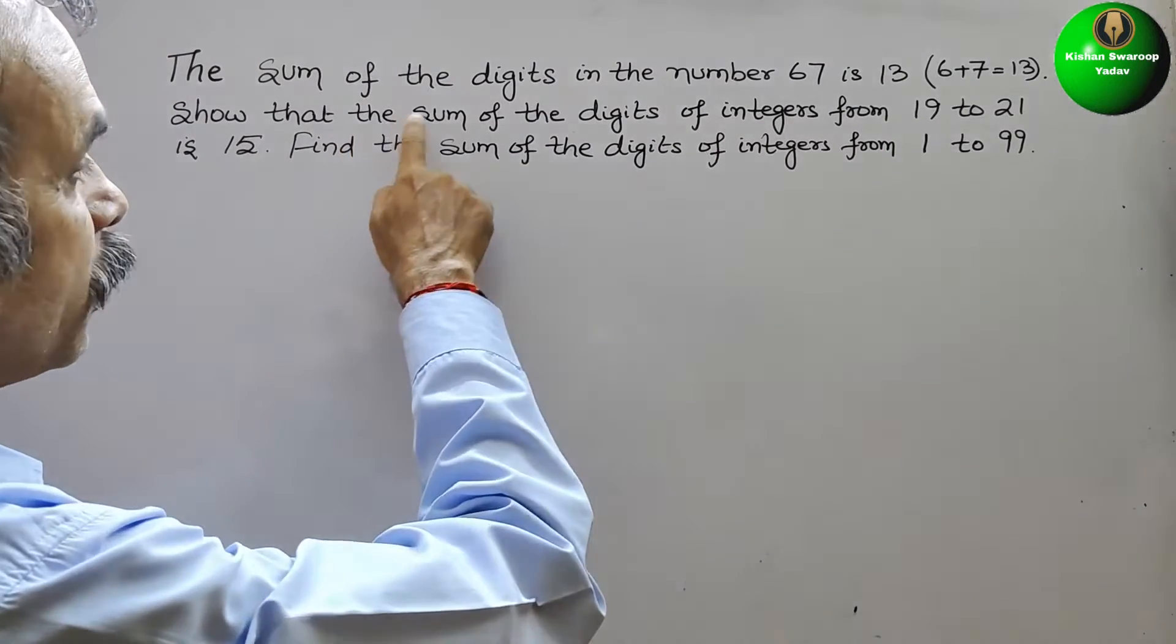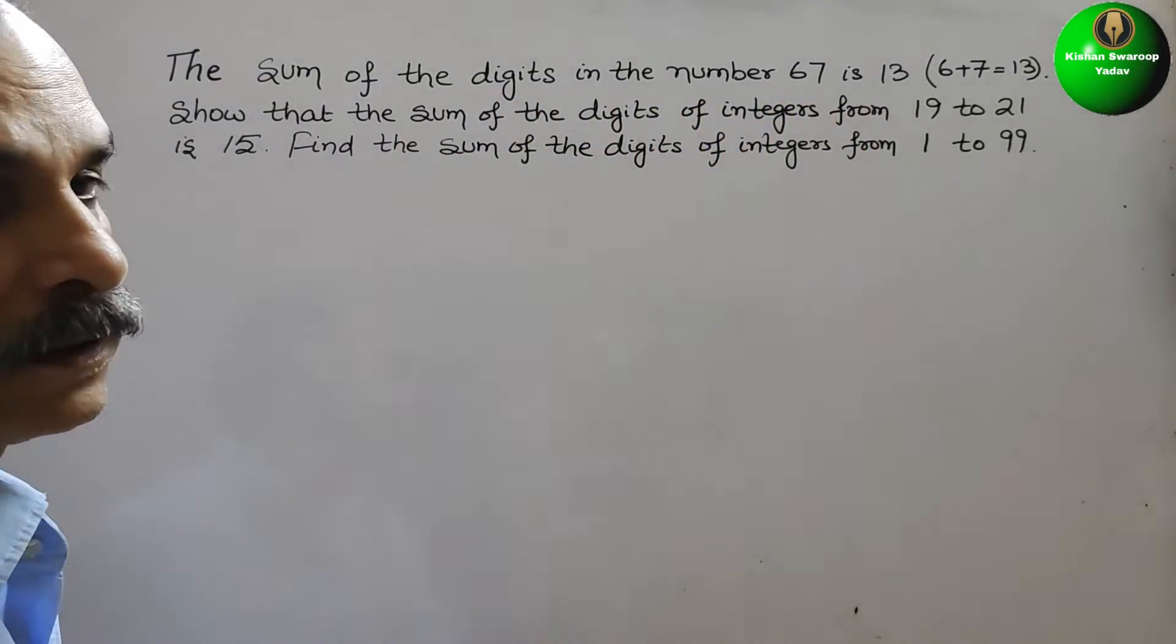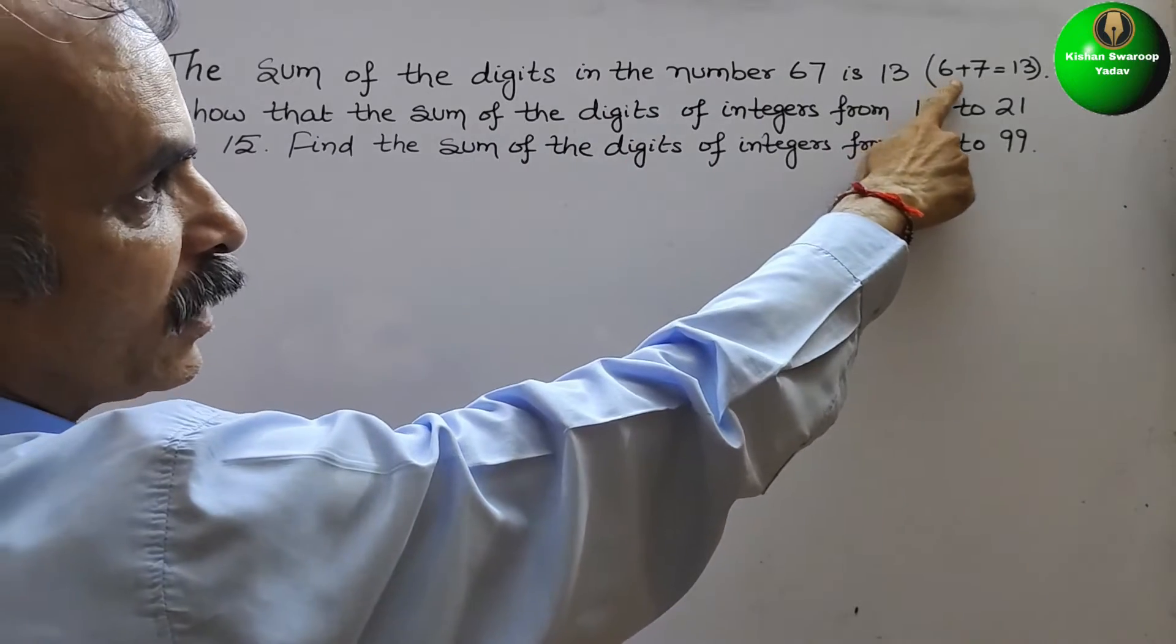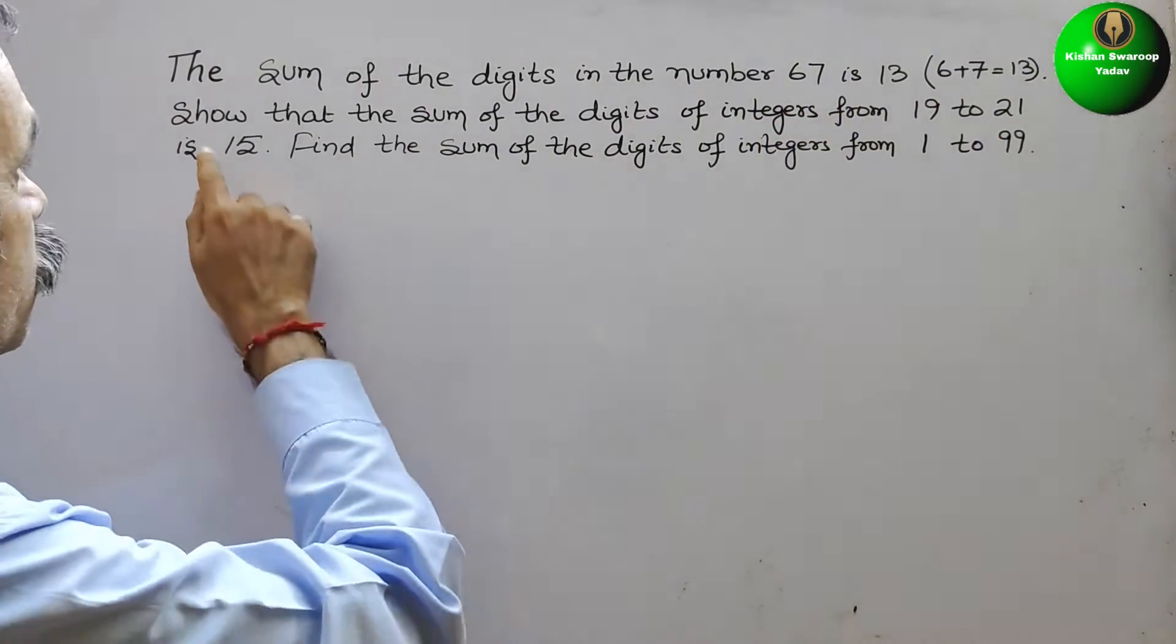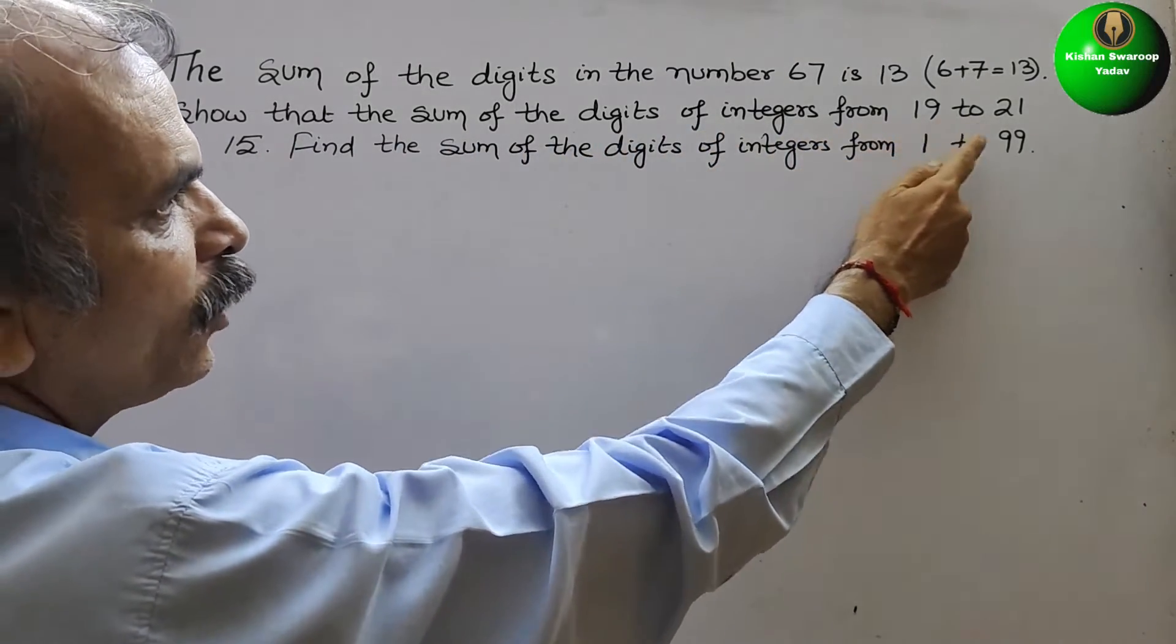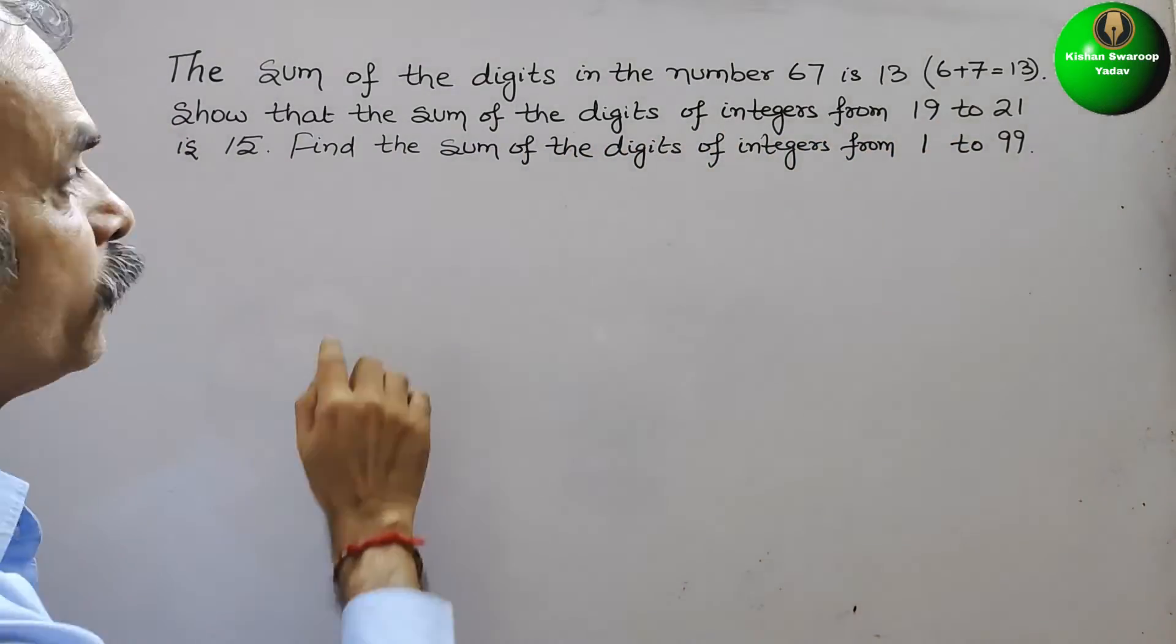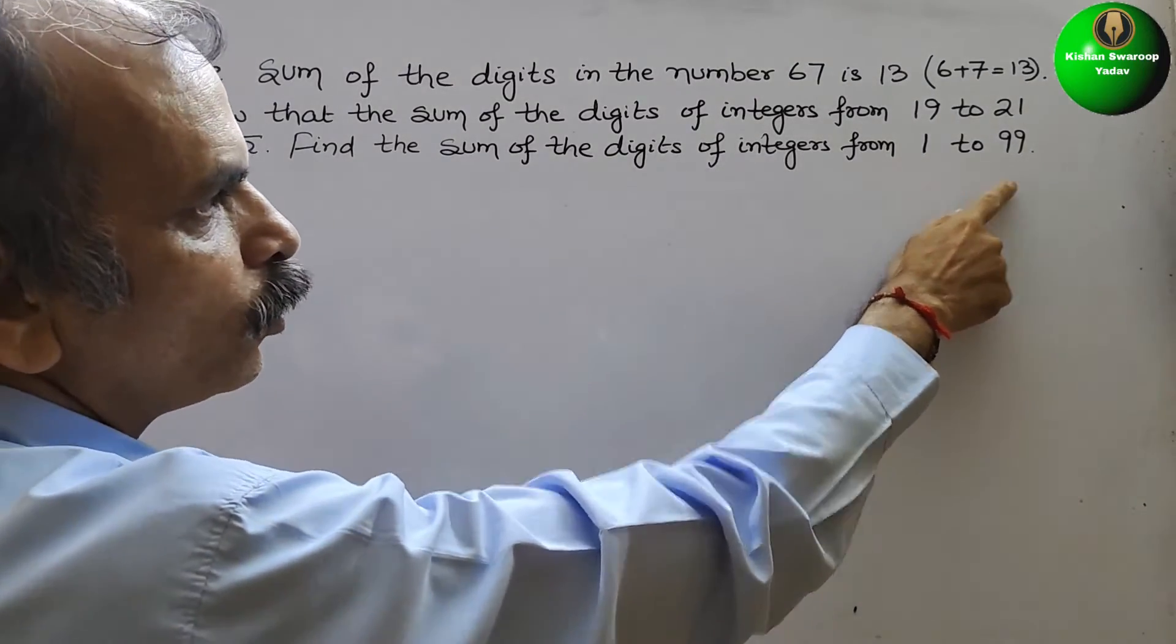Your question is: the sum of the digits in number 67 is 13, 6 plus 7 is equal to 13. Show that the sum of the digits of integers from 19 to 21 is 15. Find the sum of the digits of integers from 1 to 99.